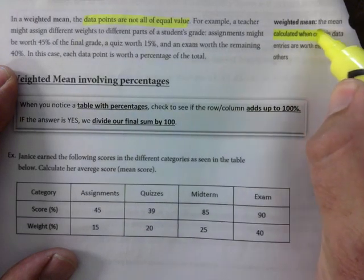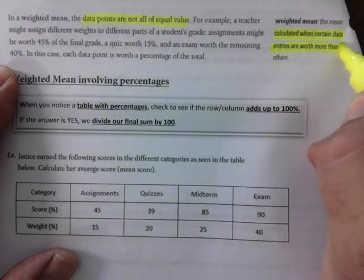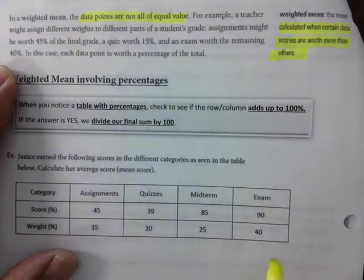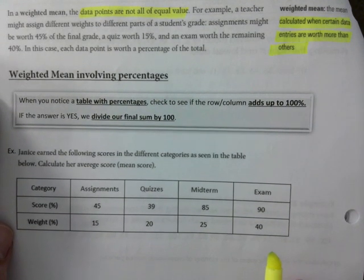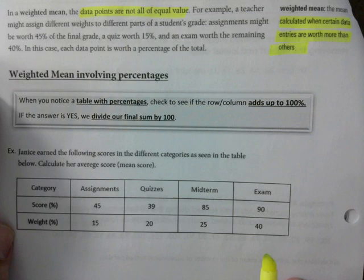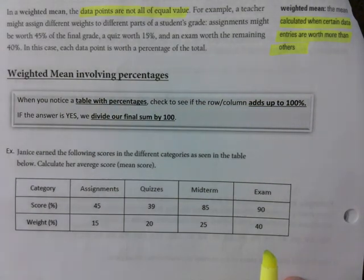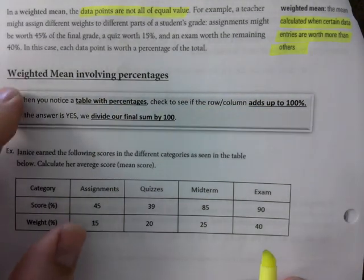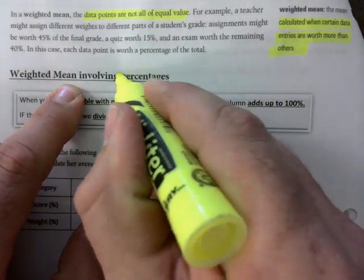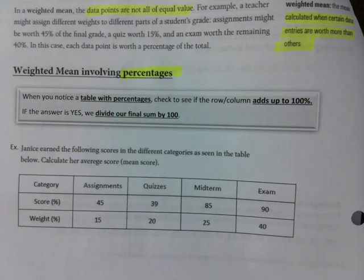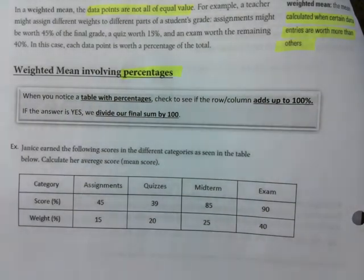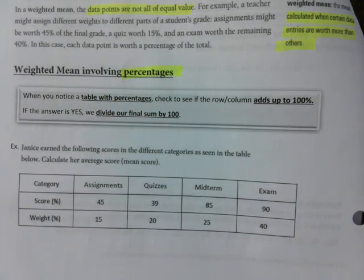Weighted mean is calculated when certain data entries are worth more than others. I'm trying to repeat the message here. I branched this into two categories.